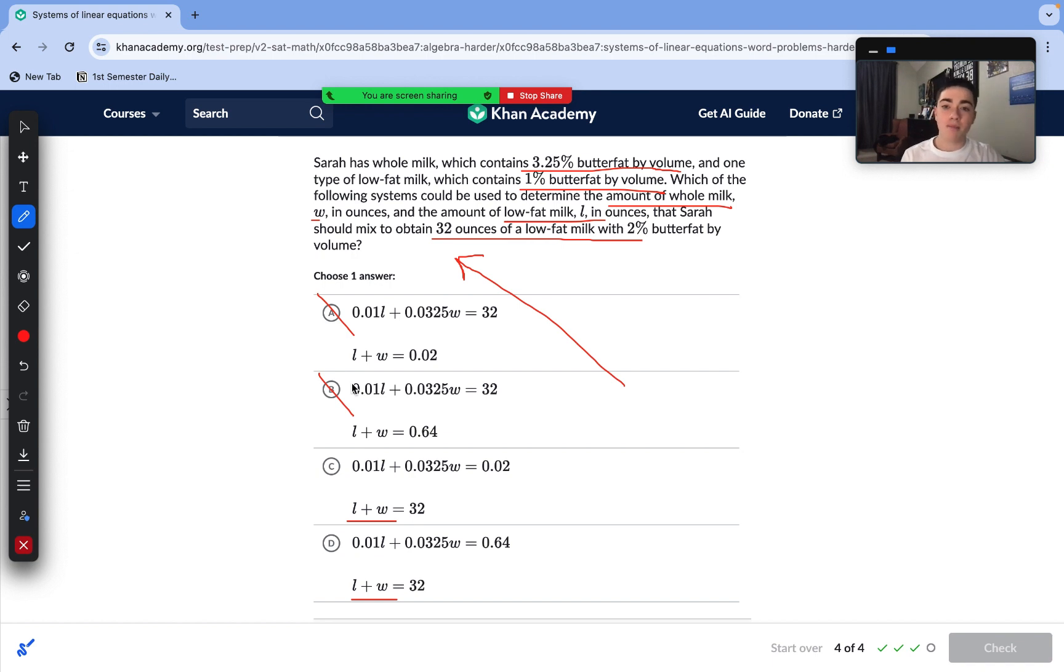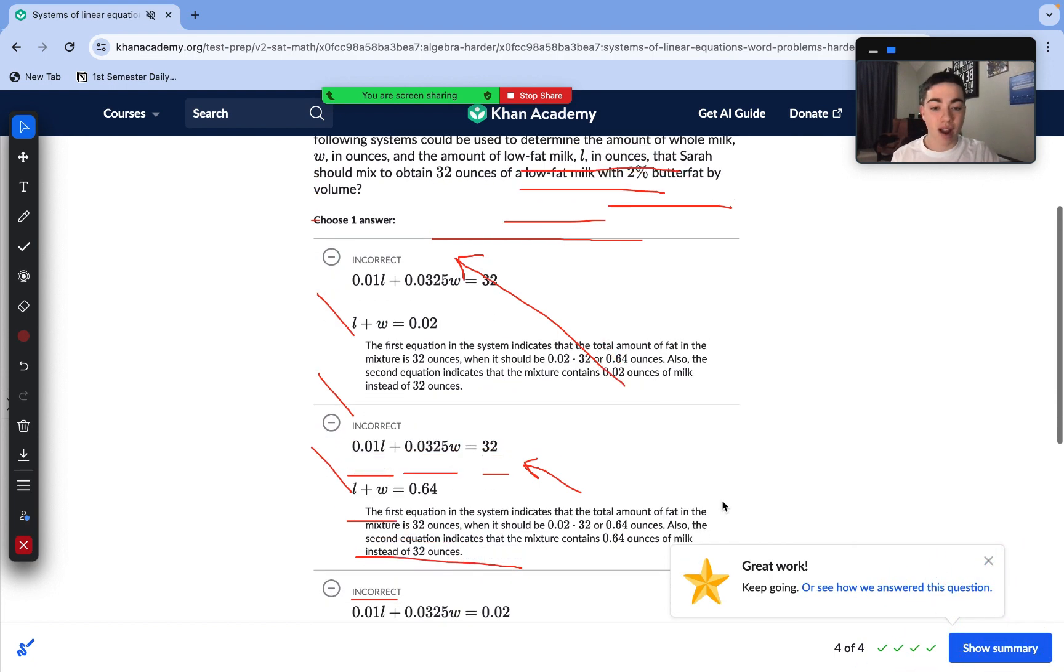Let's use some common sense to figure this out. We need 32 ounces of our low-fat mixed milk, so that's going to be the total of adding up our L and our W variables. We can cross out answer choice A and B. Now we need to see which makes sense. Our L and W variables are going to be quite high, like 10 and 22, to add up to 32. But we can see here our first equation, we're just reaching 0.01 plus 0.03 is 0.04. That's if we had one ounce of each, which is even greater than 0.02, which completely rules out answer choice C. So that only leaves answer choice D as the correct answer. Never underestimate the power of using common sense for these answer choices.